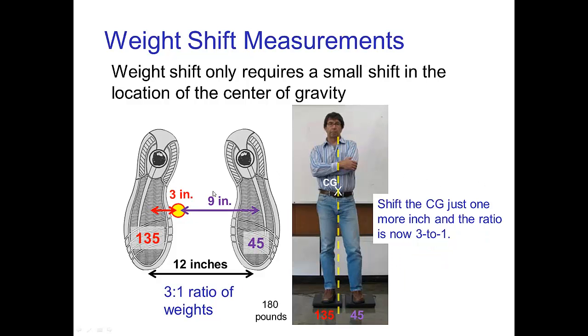And here I've shifted it just one more inch and so now the center of gravity is such that the center of pressure is three inches from one foot and nine inches from the other foot. And in this case the ratio of weight is three to one,